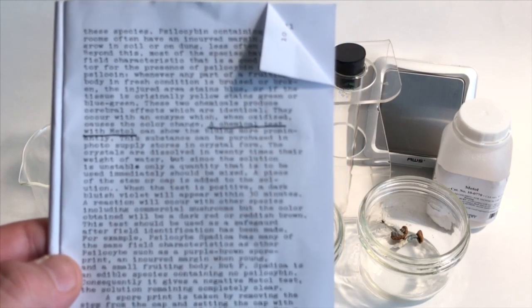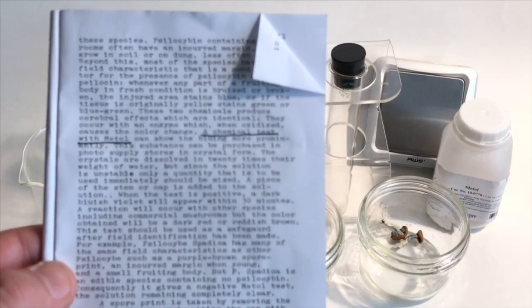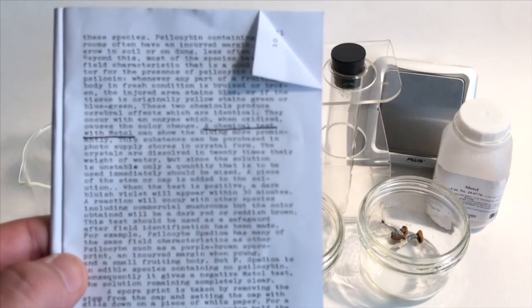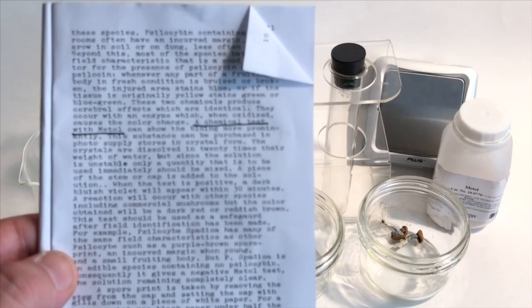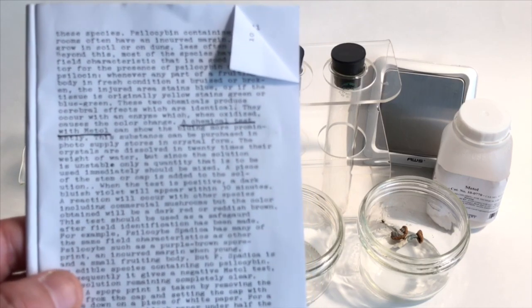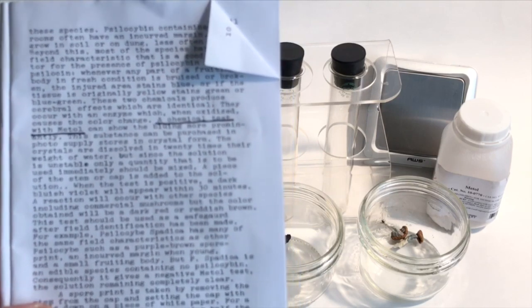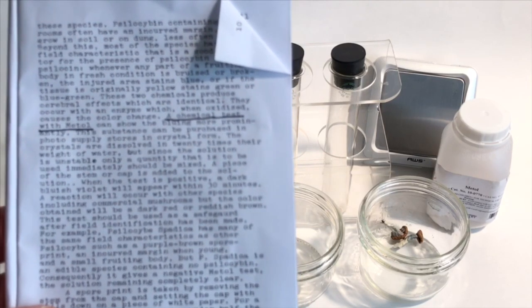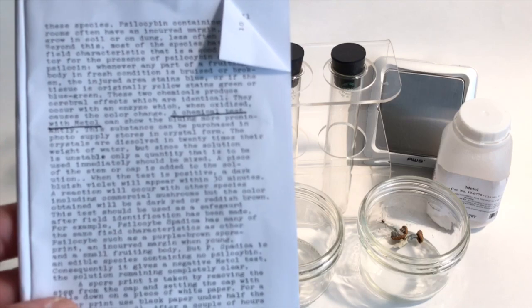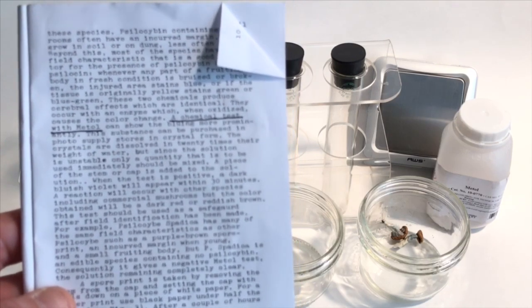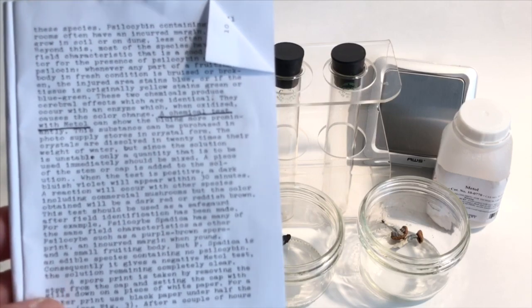For example, Psilocybe spadica has many of the same field characteristics as other Psilocybe, such as purple-brown spore print, an incurved margin, and when young, a small fruiting body. But spadica is an edible species containing no psilocybin. Consequently, it gives a negative metol test, the solution remaining completely clear.